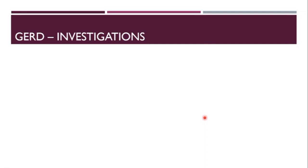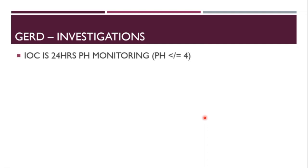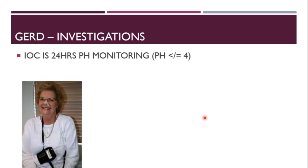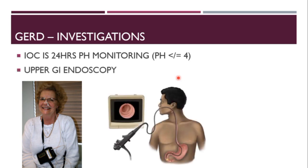What investigations can be done to confirm the diagnosis? The investigation of choice is 24-hour pH monitoring. A tube is sent into the esophagus which constantly monitors the pH. Whenever there is acid reflux, the pH will go down. Over 24 hours, if the pH was equal to or less than 4, the diagnosis of GERD can be confirmed. We can also do upper GI endoscopy to check any complications of GERD in the esophagus.